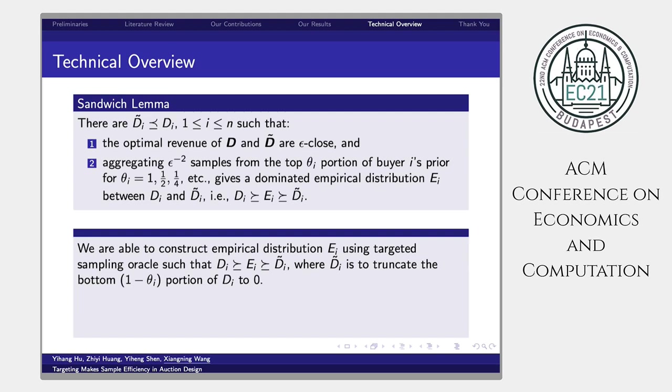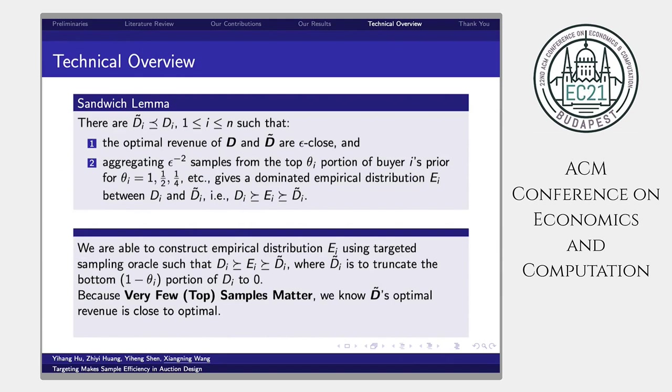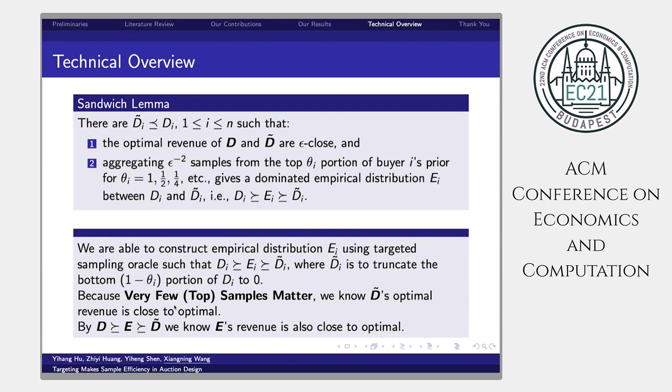Recall our first lemma, because only very few top samples matter. We know that d̃'s optimal revenue is close to the optimal revenue of d. By d dominate e dominate d̃, we know e's revenue is also close to the optimal. Therefore, if we design auction based on our constructed distribution ei, the algorithm output is not far from the optimal output in this problem. And therefore, we have given a solution of this problem under our new targeted sampling model.